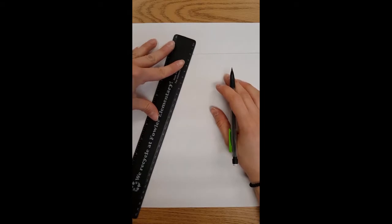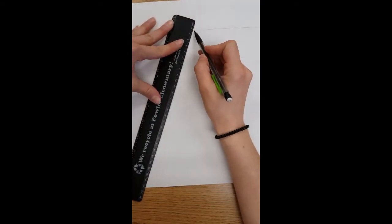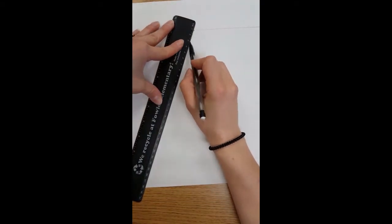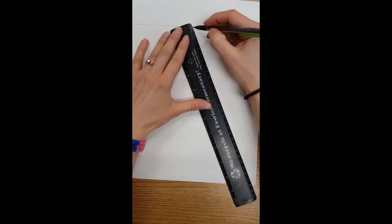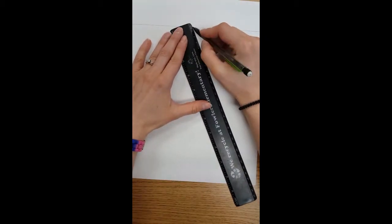From that vanishing point we need to draw two lines. It's going to make a big triangle. Please draw these really lightly because they're going to get erased later.